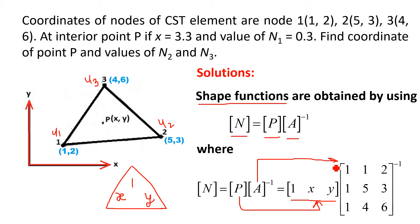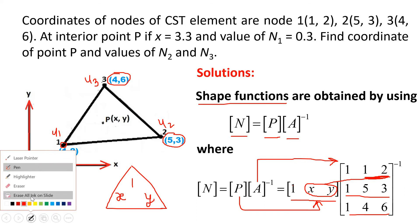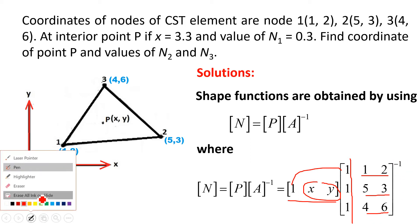The A matrix represents the connectivity matrix, meaning we write the parametric matrix for each of the three nodes of the triangle, substituting their coordinates. For node 1, coordinates (1, 2) give the row [1, 1, 2]; for node 2, coordinates (5, 3) give [1, 5, 3]; and for node 3, coordinates (4, 6) give [1, 4, 6]. This completes the connectivity matrix A.